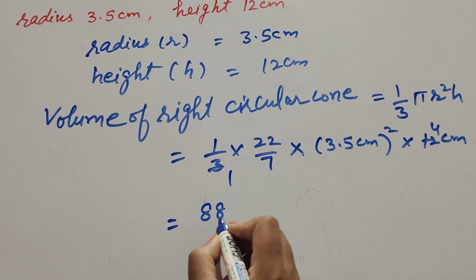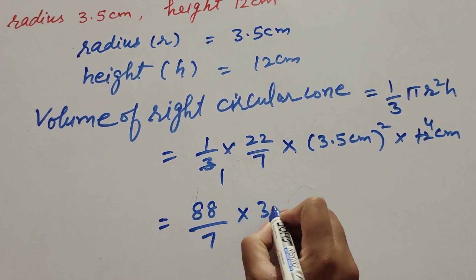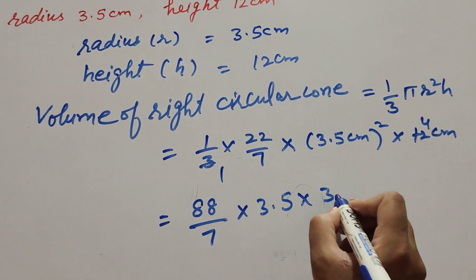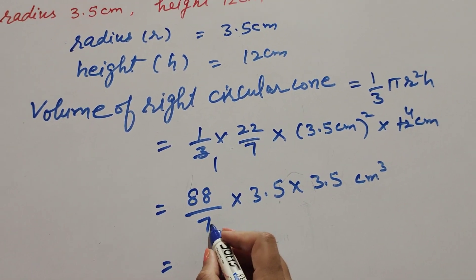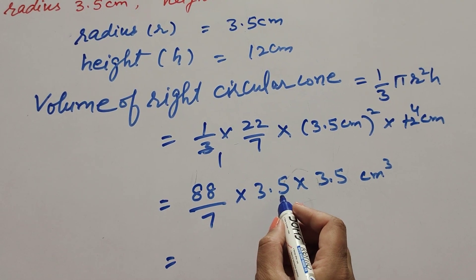7 and 3.5 are both divisible by 7, so we cancel them. 7 ones are 7, 0.5 sevens are 3.5. Now 88 times 0.5, we get 44.0 times 3.5 cm cubed.